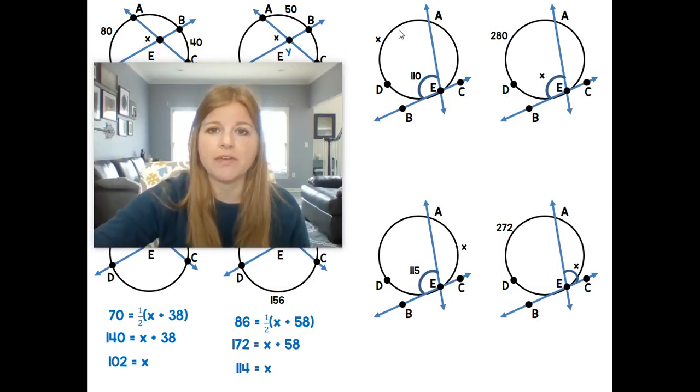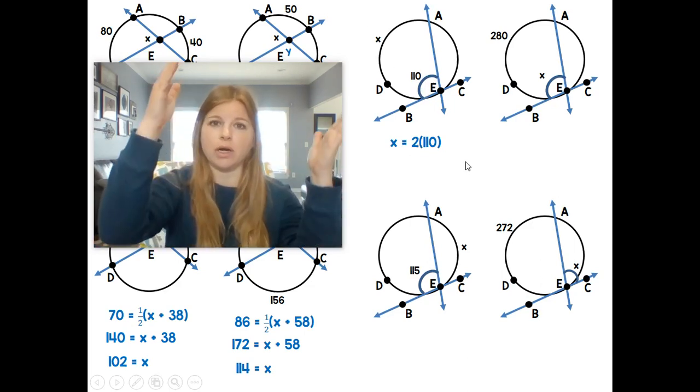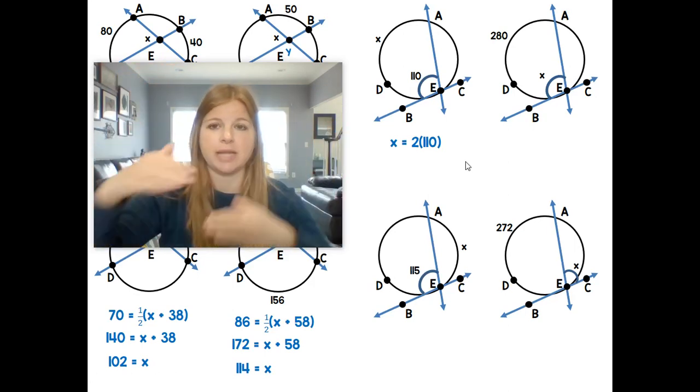Let's look at these. If I want to find the measure of this arc, well this arc and the relationship of this angle, if I know the angle is 110, then X is equal to 2 times that amount. So it's like you can go either way. You double the angle to get the arc, or you take half of the arc to get the angle.